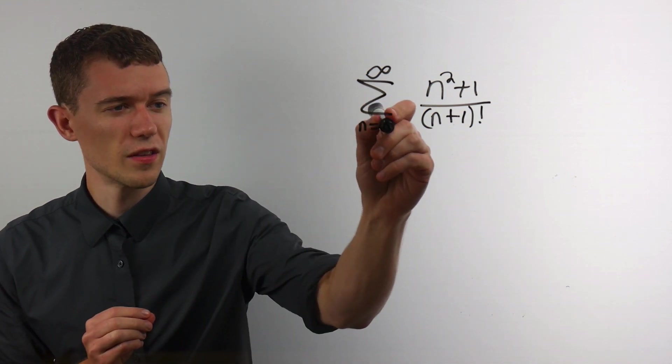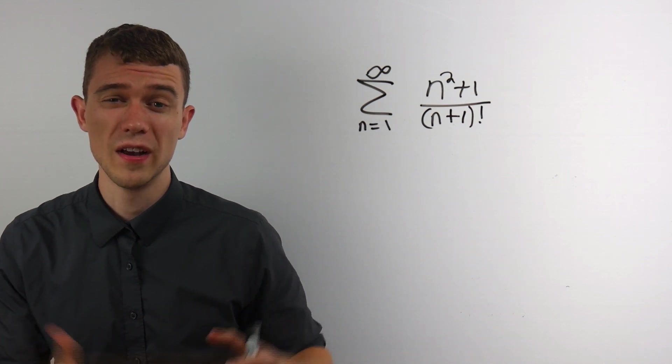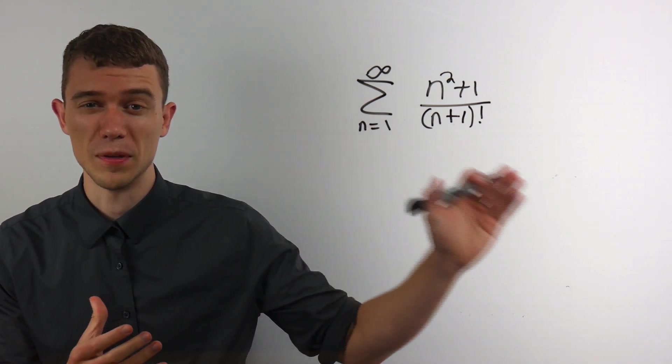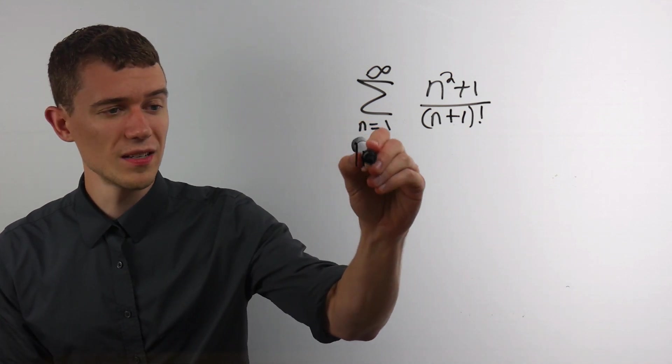So here we go. I guess we should start this series somewhere. Might as well be at one. It could be at two. It's not going to change the answer because convergence or divergence happens way down the road at infinity.